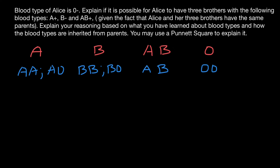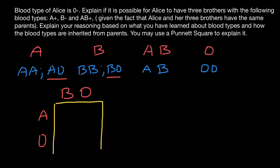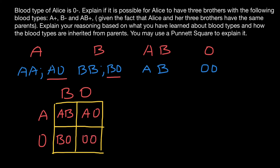Now imagine that one parent belongs to blood group B and has genotype B-O, and another parent belongs to blood group A and has genotype A-O. When we build a simple Punnett Square to see what blood groups and genotypes are possible among the progeny, we get: A-B here, A-O genotype here, B-O genotype here, and O-O genotype here.